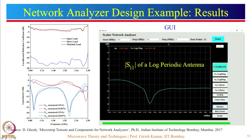Of course, calibration is required to make these results more accurate. The GUI of the system is a result of software running on any computer, with start, stop, and step frequency inputs and various options for calibration and display. There is also a marker functionality. What is currently shown on the graph is S11 of a log-periodic antenna — the magnitude only, this being a scalar network analyzer displaying only the magnitude part of the S-parameters.